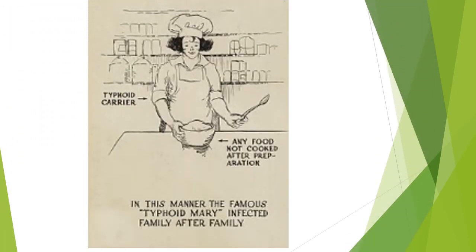Remember the case of Typhoid Mary. Typhoid Mary was a cook — her name was Mary. She carried typhoid in her gallbladder, and the foods which she cooked without proper hygiene spread typhoid to 60 or 70 people. She was the index case. So remember: you can carry typhoid in the gallbladder — there can be a chronic carrier state.